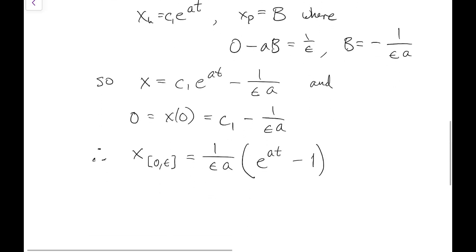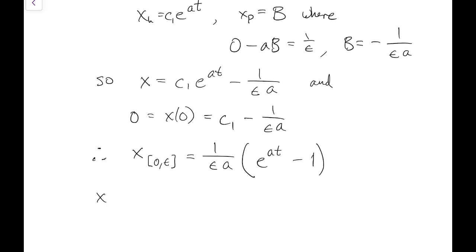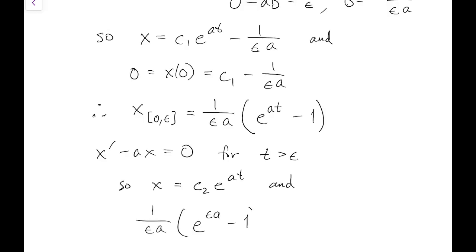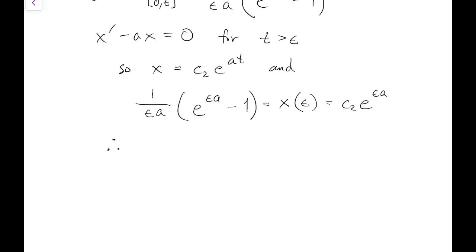For t greater than epsilon, the forcing is turned off, so we only have the homogeneous solution. The initial time for this segment is at t equals epsilon, and we evaluate the previous segment there to get the new initial value. That's used to determine C2 for the second segment.